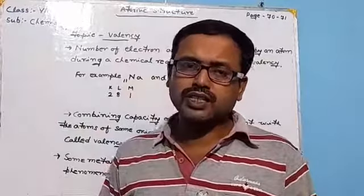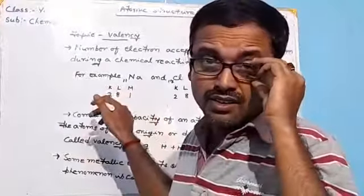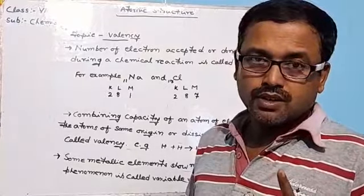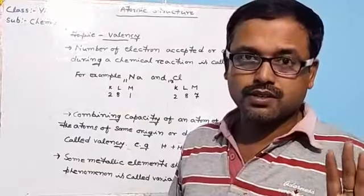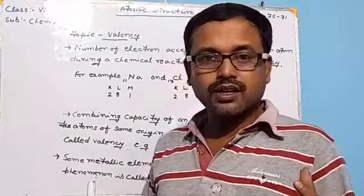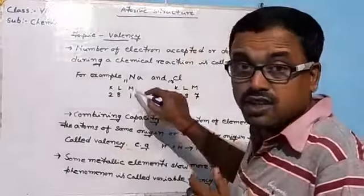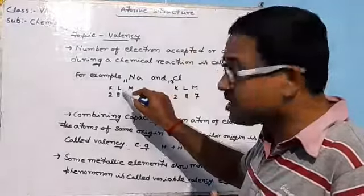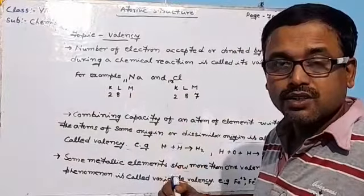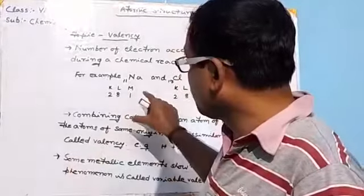For other elements, atoms try to achieve their octet to attain stability. In the case of sodium, only one electron is present in its last orbit, meaning it would need seven more electrons to complete its octet, which is not feasible. So sodium has another option: it loses that one electron from the last shell, making the L shell — which already has eight electrons — the new outermost shell. This is how sodium achieves stability by donating one electron.